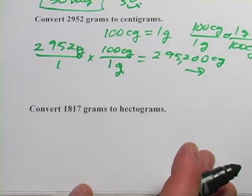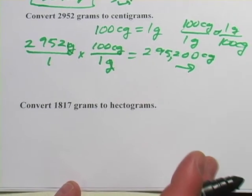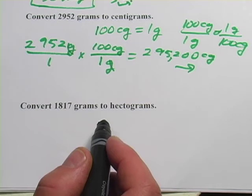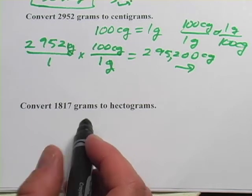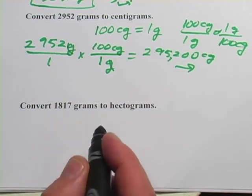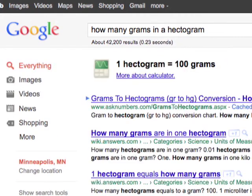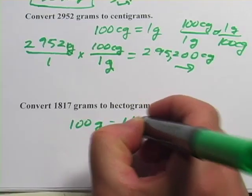And let's look at one more here. It says, convert 1,817 grams to hectograms. So you might want to ask yourself, how many grams in a hectogram, or type that into a search engine. And what you'd find out is 100 grams is 1 hectogram.